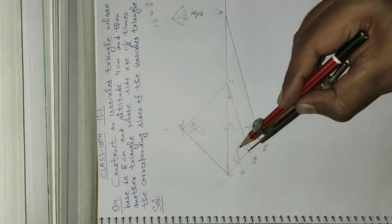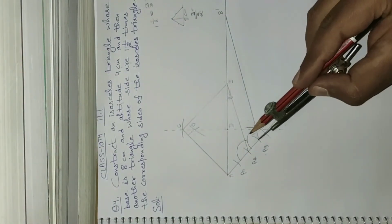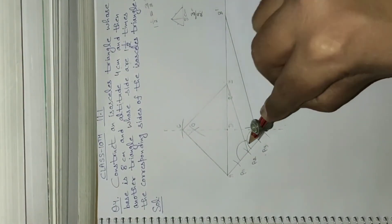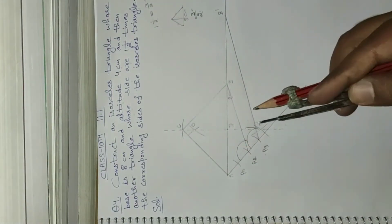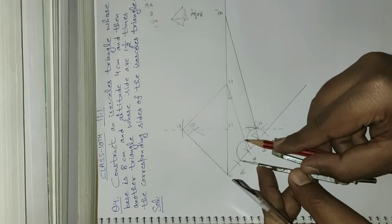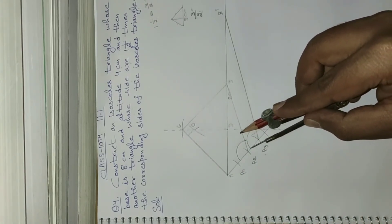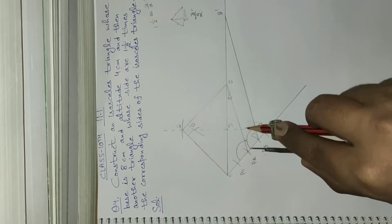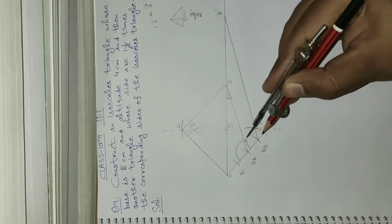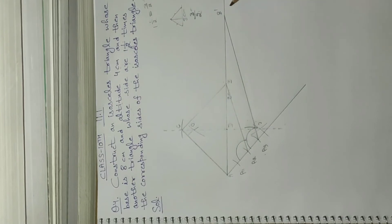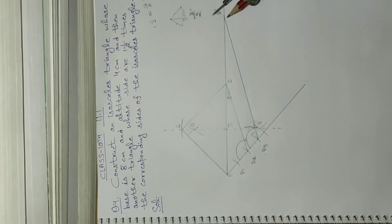To summarize: make an arc from A2, then with the same compass opening make an arc from A3. Measure the arc distance, place the compass at that point, and make an intersecting arc. Join the intersecting point with A3 and extend to B'. This gives the parallel line A3B' to A2B.